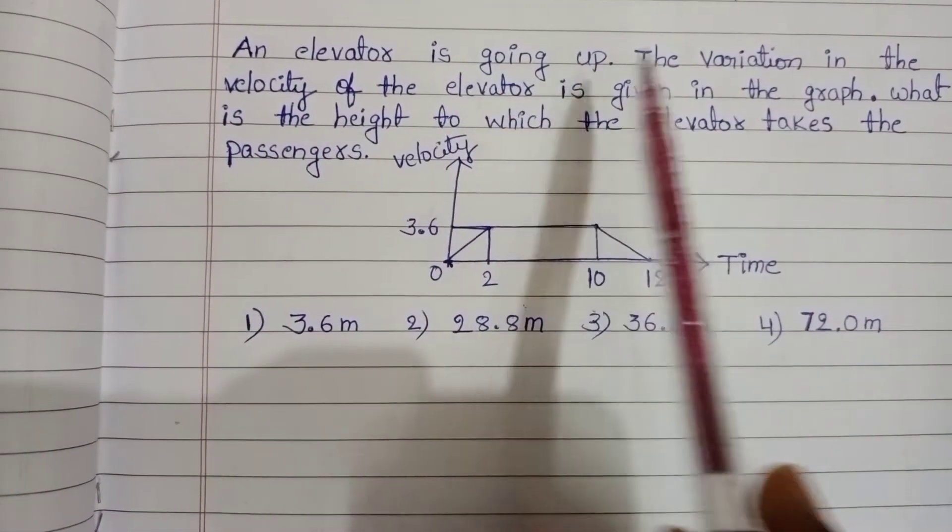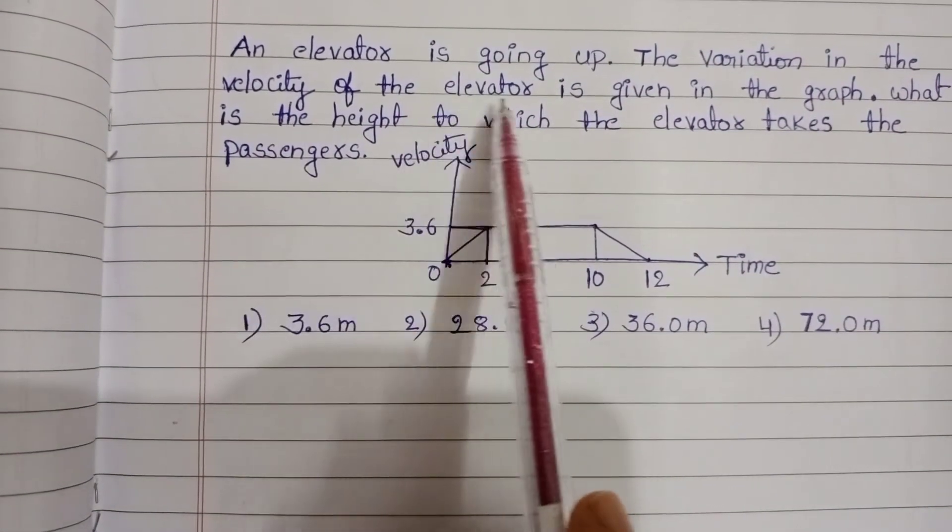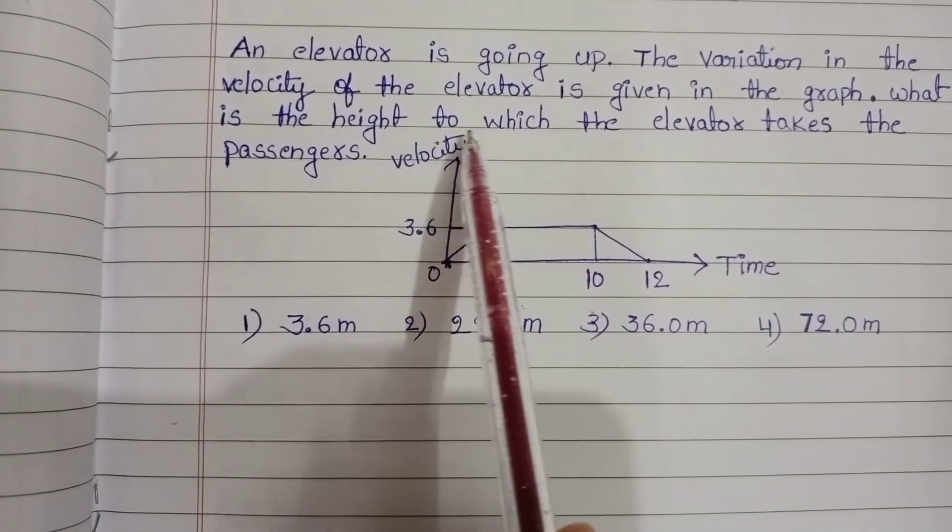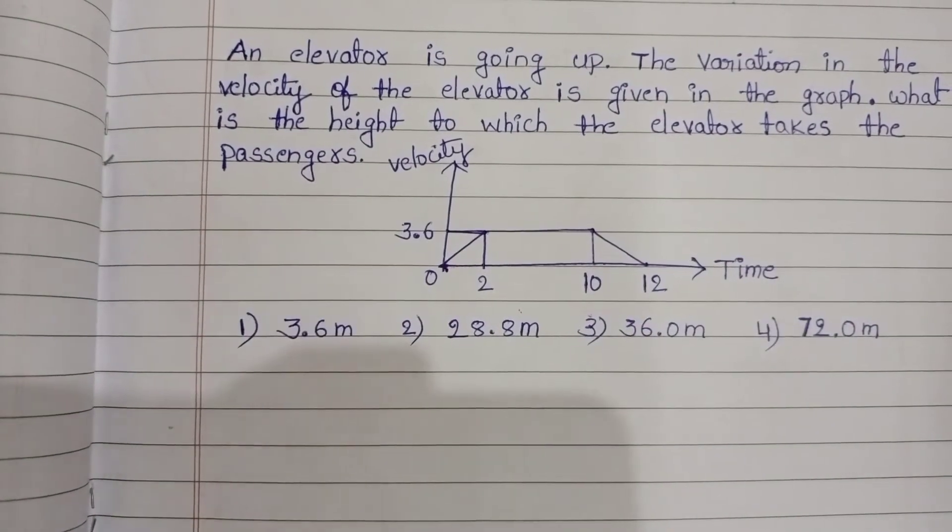An elevator is going up. The variation in the velocity of the elevator is given in the graph. What is the height to which the elevator takes the passengers?